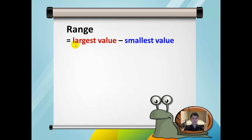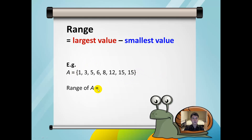The range is defined by the largest value minus the smallest value. Given a set of data here, the largest value is 15 and the smallest value is 1, so the range of A is equal to 15 minus 1, which is 14.